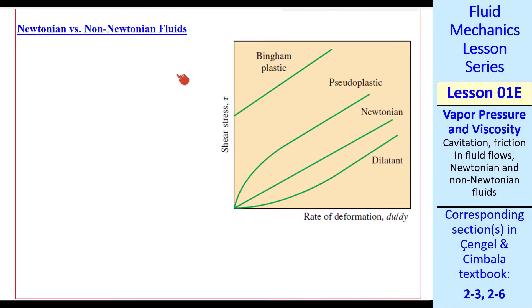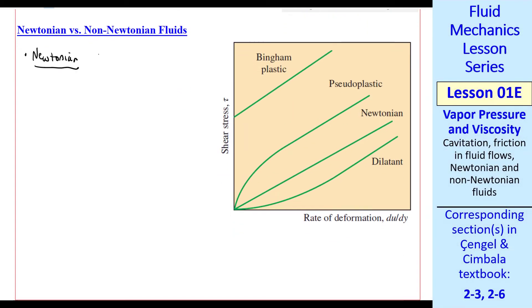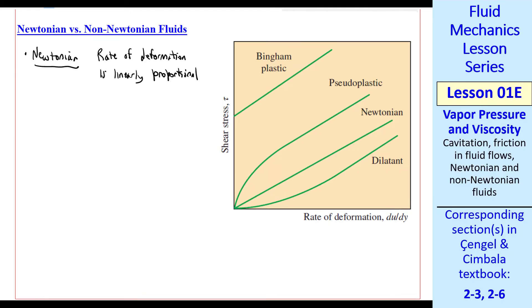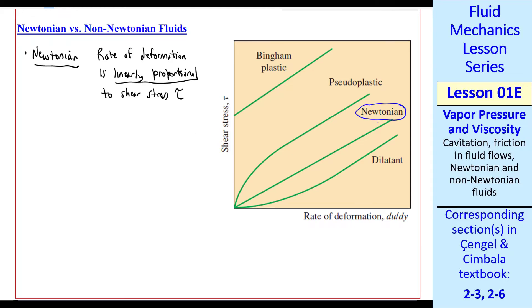Finally, let's talk about Newtonian versus non-Newtonian fluids. A Newtonian fluid is defined as a fluid where the rate of deformation, which is a strain rate, is linearly proportional to shear stress tau. For a Newtonian fluid, the rate of deformation is linear with shear stress tau, as you can see here.